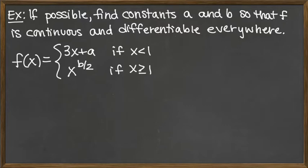So what we have here is the top function or the top piece is 3x plus a. That is defined whenever x is less than 1, but 3x plus a is simply a line, because remember that a is just a number. So it would be a line with slope 3 and the a would give our y-intercept.